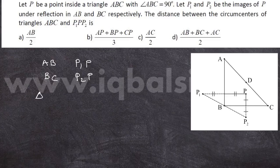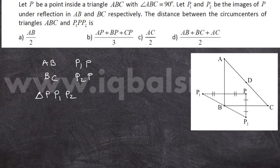So triangle PP1P2 is a triangle right-angled at angle P. Now I am going to consider the circumcircle of triangle PP1P2 — that is the circle passing through all three vertices P, P1, and P2. Now P1P and PP2 will be the two chords of this circle.